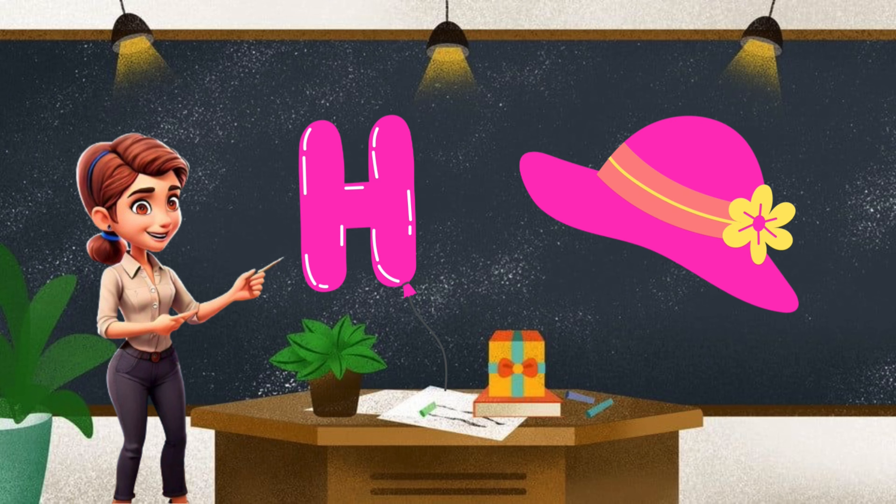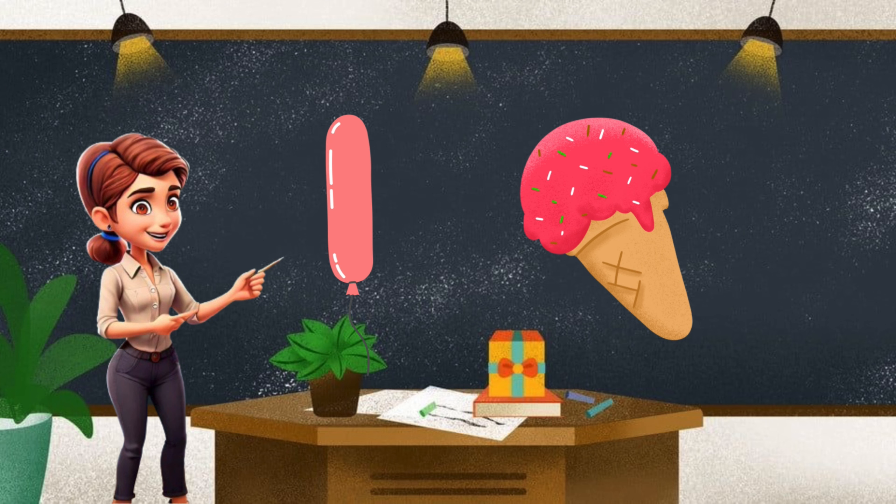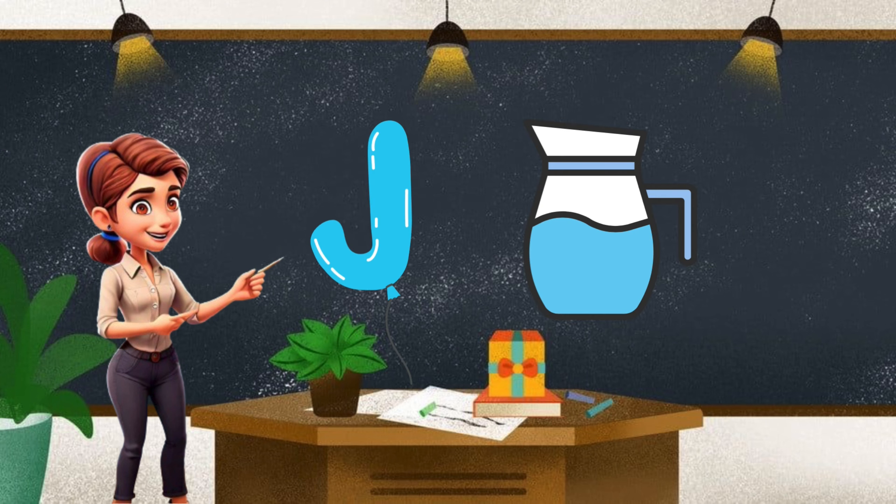H. H for hat, pink. I. I for ice cream, red. J. J for jug and water, blue.